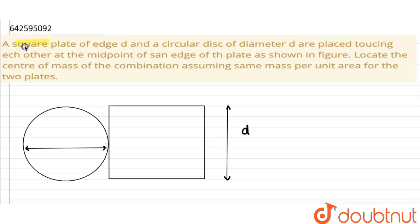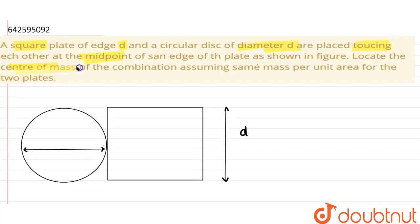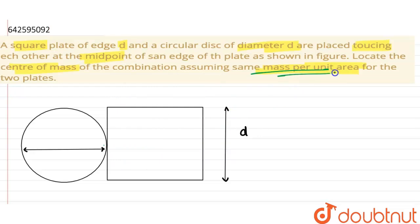Hello everyone. The question is: a square plate of side d and a circular disc of diameter d are placed touching each other at the midpoint of the edge of the plate. We need to locate the center of mass of the combination, assuming the same mass per unit area for the two plates.